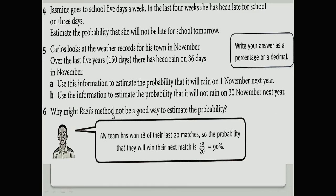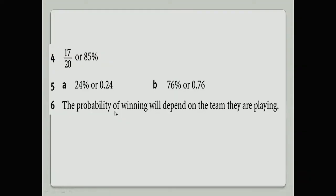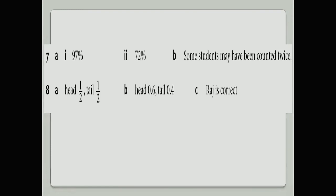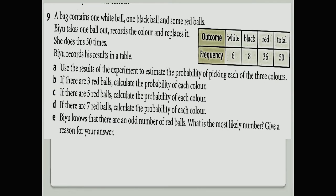Now a bag contains one white ball, one black ball, and some red balls. Here are the results. She does this 50 times: Biyu takes out one ball, records the color, and replaces it. She does this 50 times.